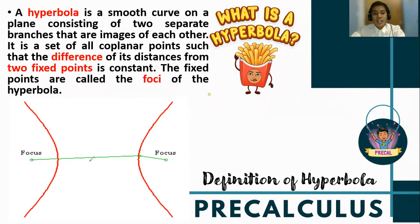Same with the ellipse, but this time we refer to the constant difference of any point on the hyperbola going to one of the foci. Later, we will discover how we subtract those distances.